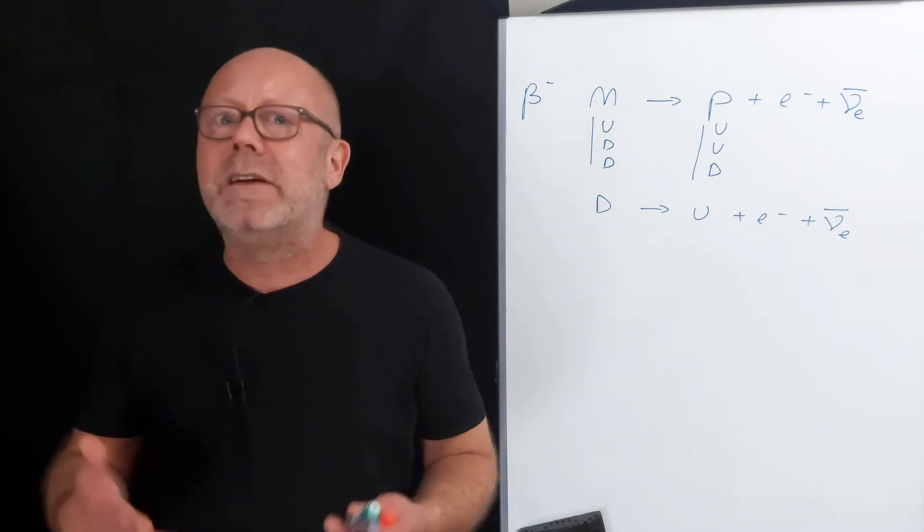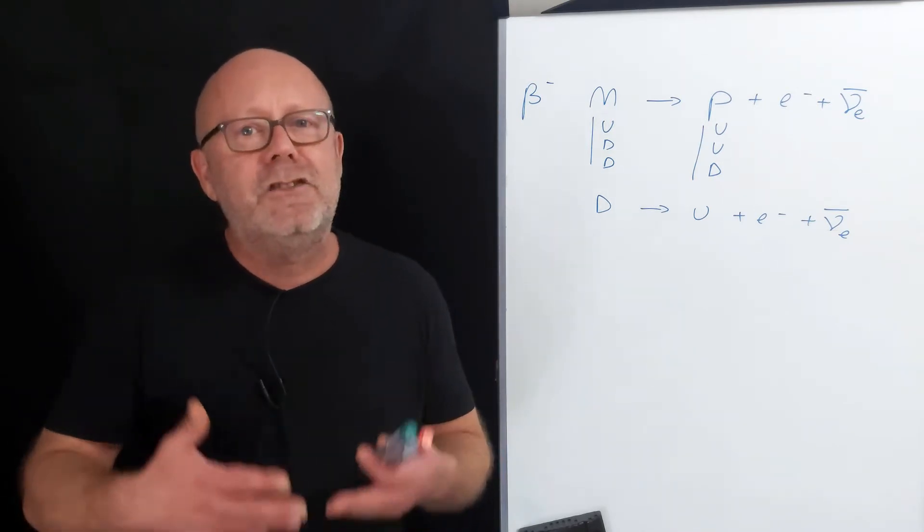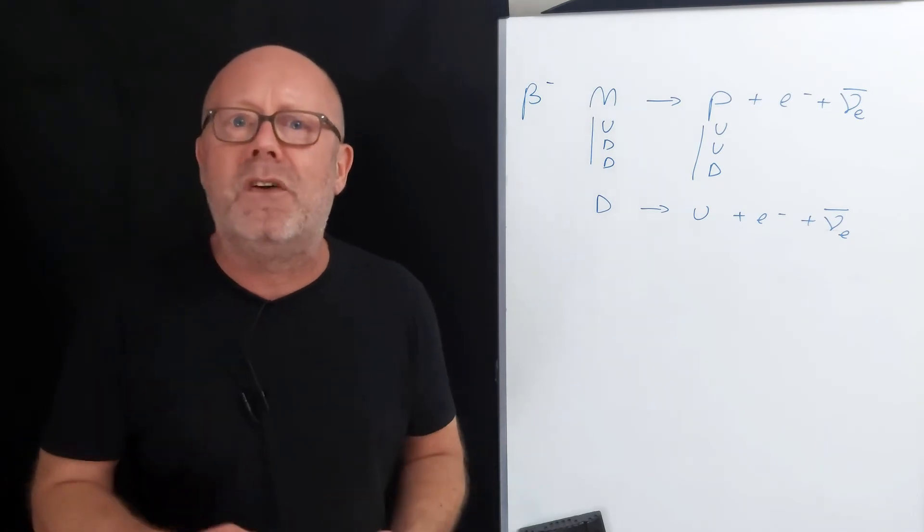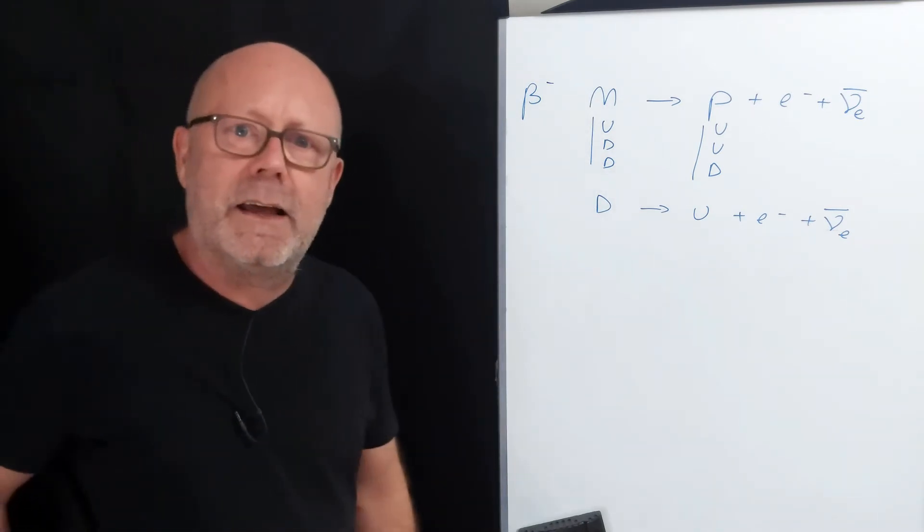And that is where Feynman diagrams really help. They show you a simple way to represent the processes which are ongoing in a particle physics reaction. Let's consider this beta decay.